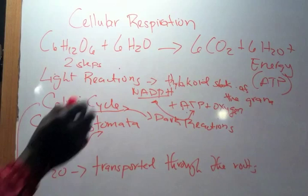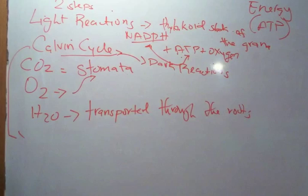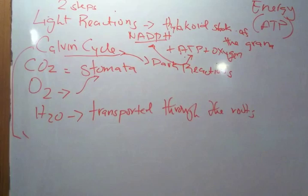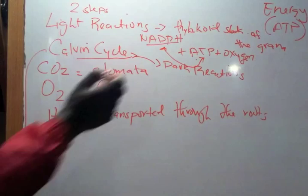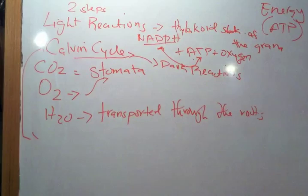Photosynthesis happens in two steps. You have the light reaction which occurs in the thylakoid stack of the grana and you have the Calvin cycle which is also called the dark reaction. NADPH and ATP plus oxygen are all created through the light reaction and you have the Calvin cycle where CO2 is absorbed in the stomata and O2 is released. You have water transported through the roots and in the Calvin cycle it's used to create the sugar.